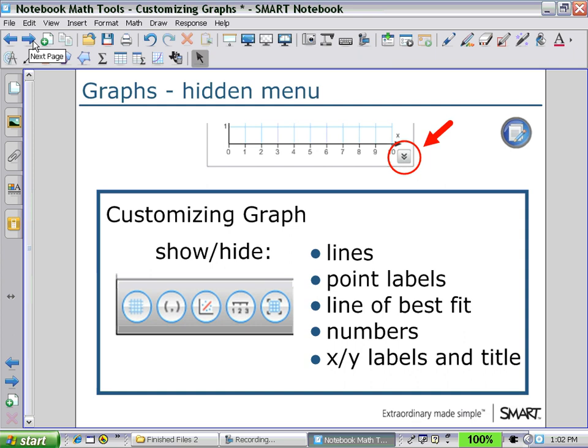Other features on the hidden menu allow me to put in grid lines, label our points, draw a line of best fit, put in numbers on the axis, label the axis, and create titles for my graphs.